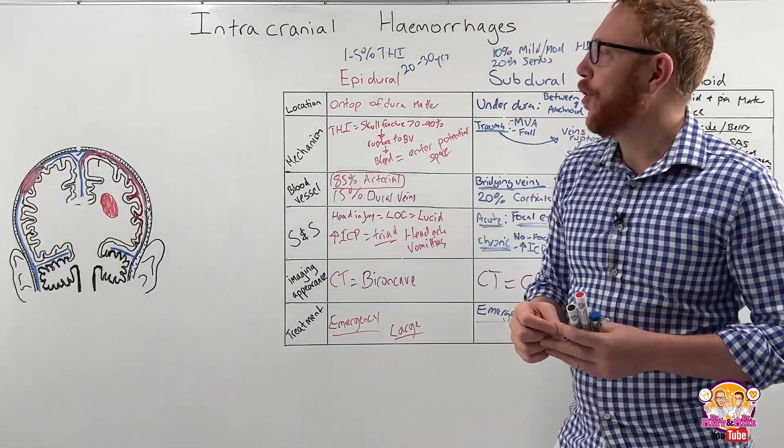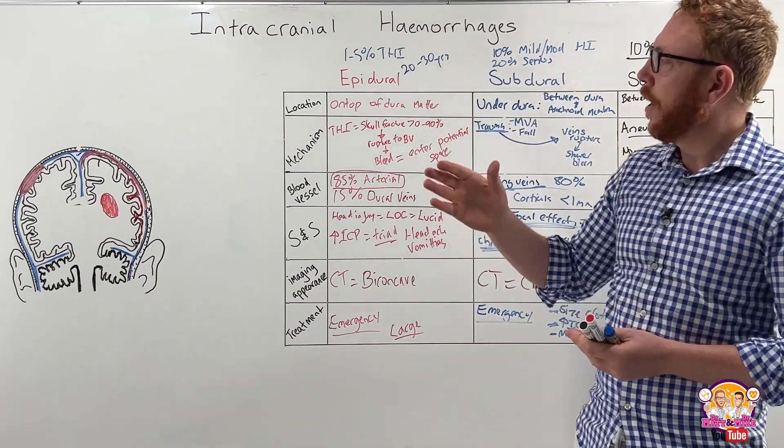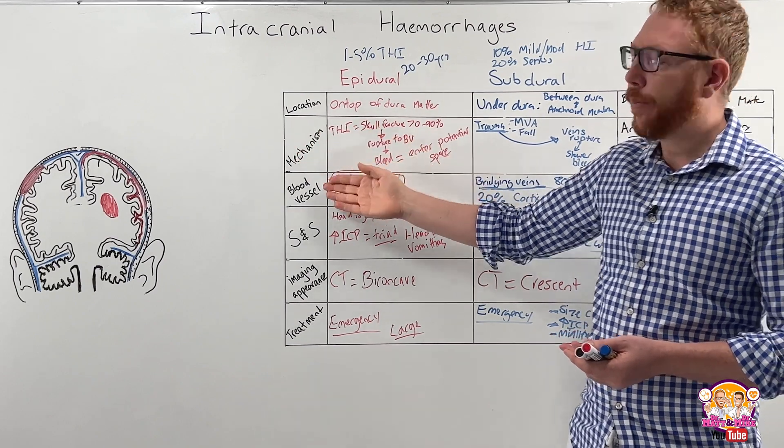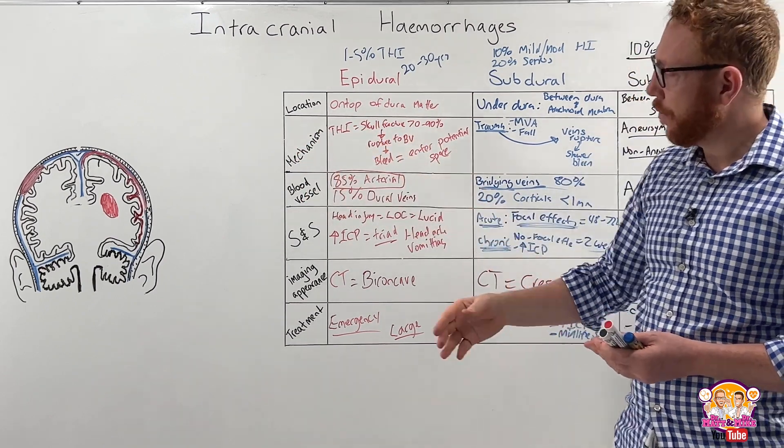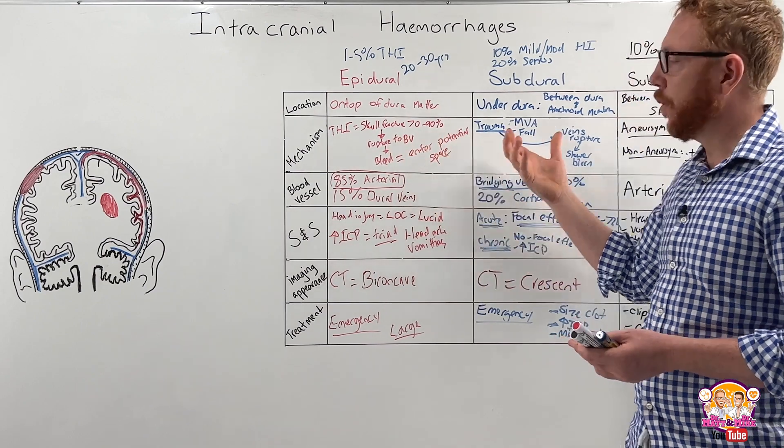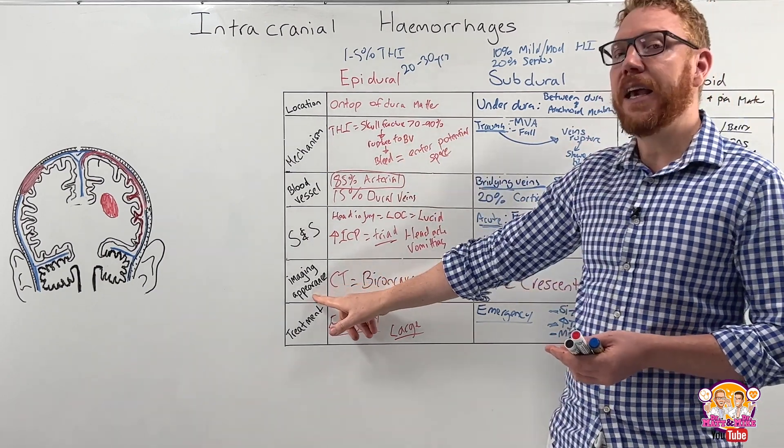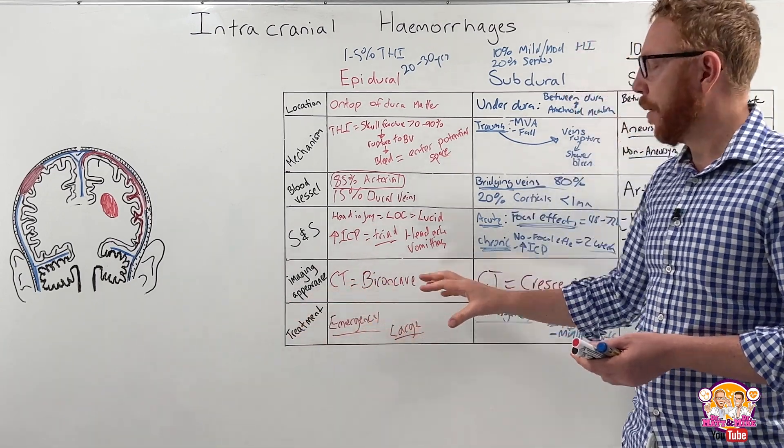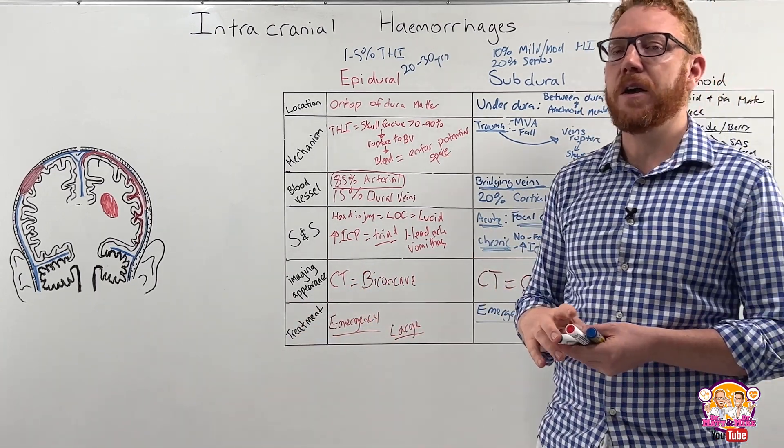So hopefully now you have a better understanding of the three subtypes of hematomas, specifically their location, the mechanism that leads to the bleed, the blood vessel that's most commonly involved, the signs and symptoms that can distinguish between the three, the CT imaging appearance that would distinguish between the three, and what treatments can be used to manage these three different types of hematomas.